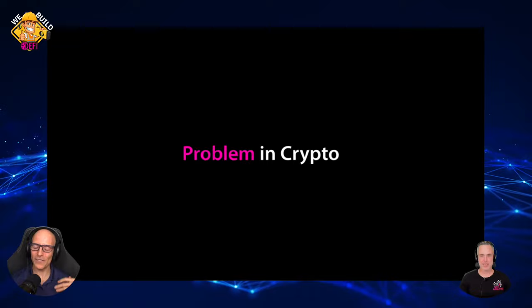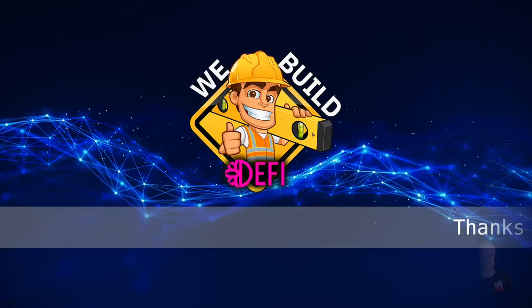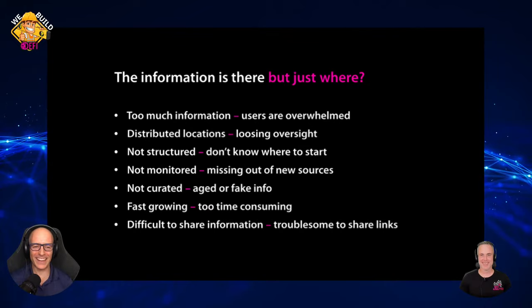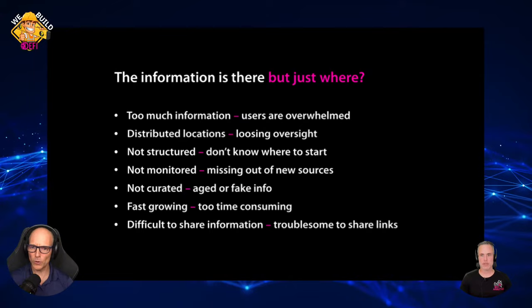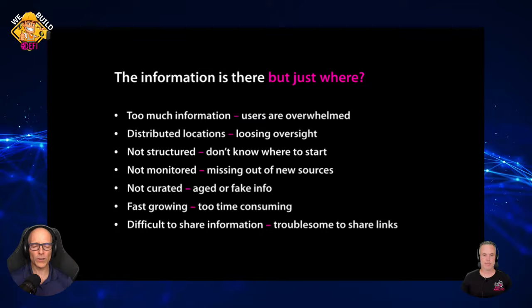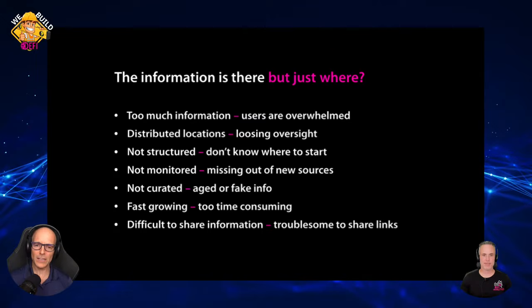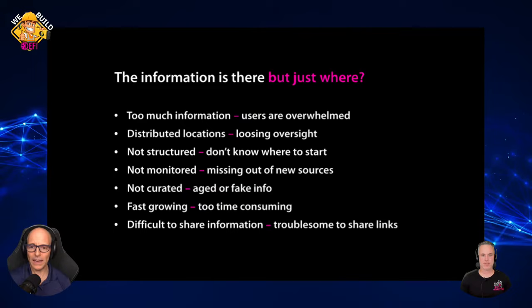So defilinks.io is a solution to a very common problem in crypto. What's the biggest problem? The information is there but just — where was our slogan — there's too much information. Users are completely overwhelmed when they want to dive into a new project. It's in distributed locations, they lose complete oversight, it's not structured, they don't know where to start, nobody monitors it. You lose out completely on new sources and resources, it's not curated, it's aged or fake information, it's so fast growing it's super time consuming to keep track. And at the end, if you want to share the information you found, it's super troublesome to share links or bookmarks.